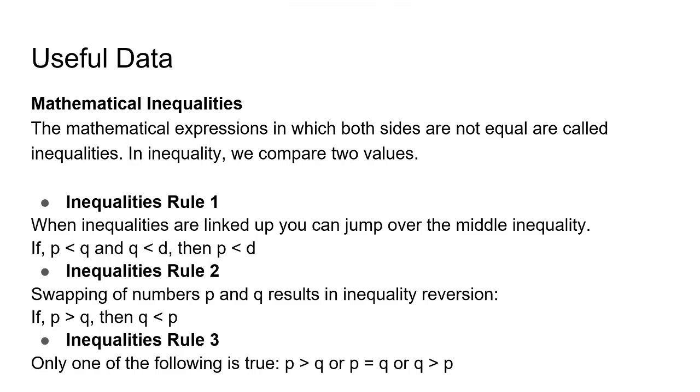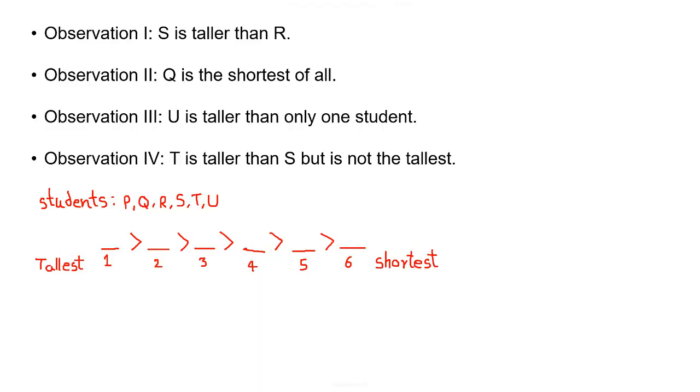So let's solve this problem. So here are the 4 observations for 6 students. We have to compare their height and sort them in order. For that we will give them numbers 1 to 6 where 1 is the tallest and 6 will be the shortest.